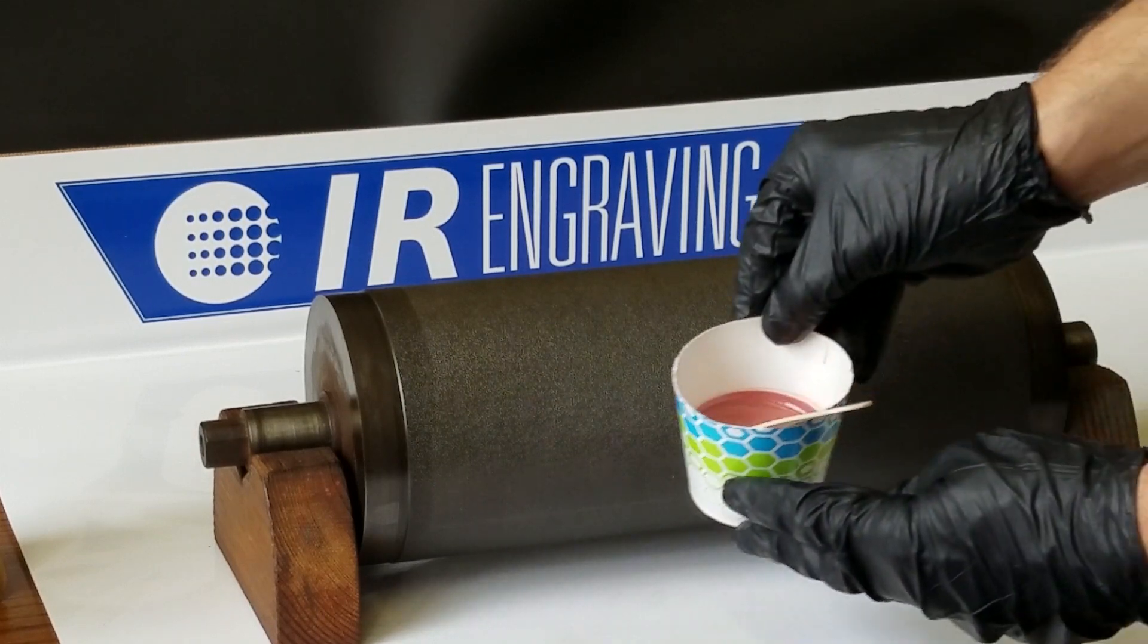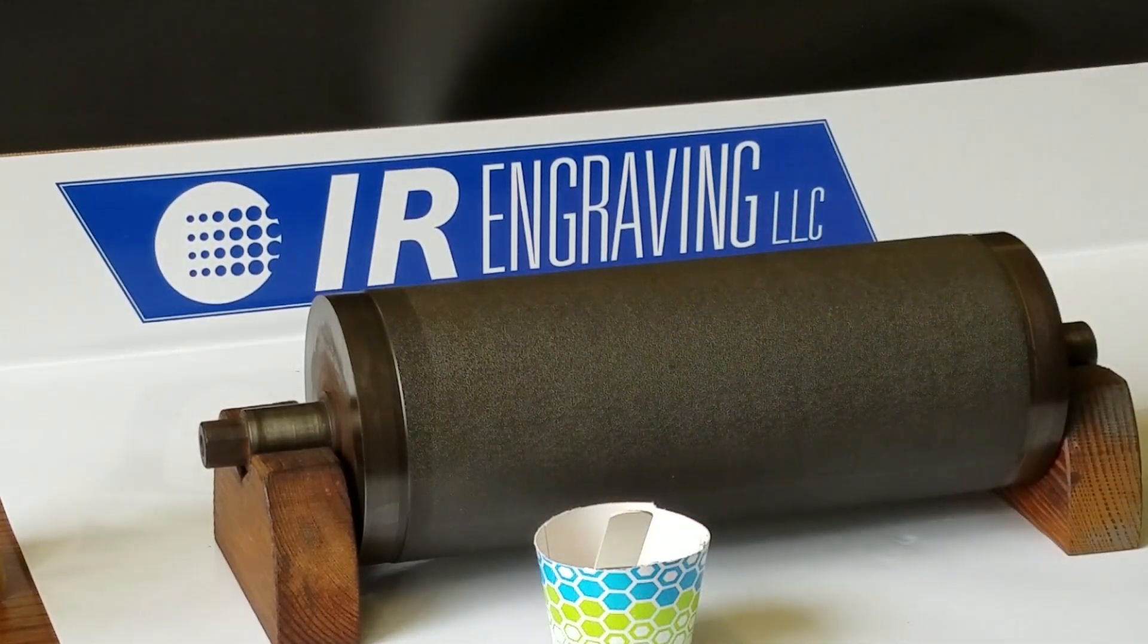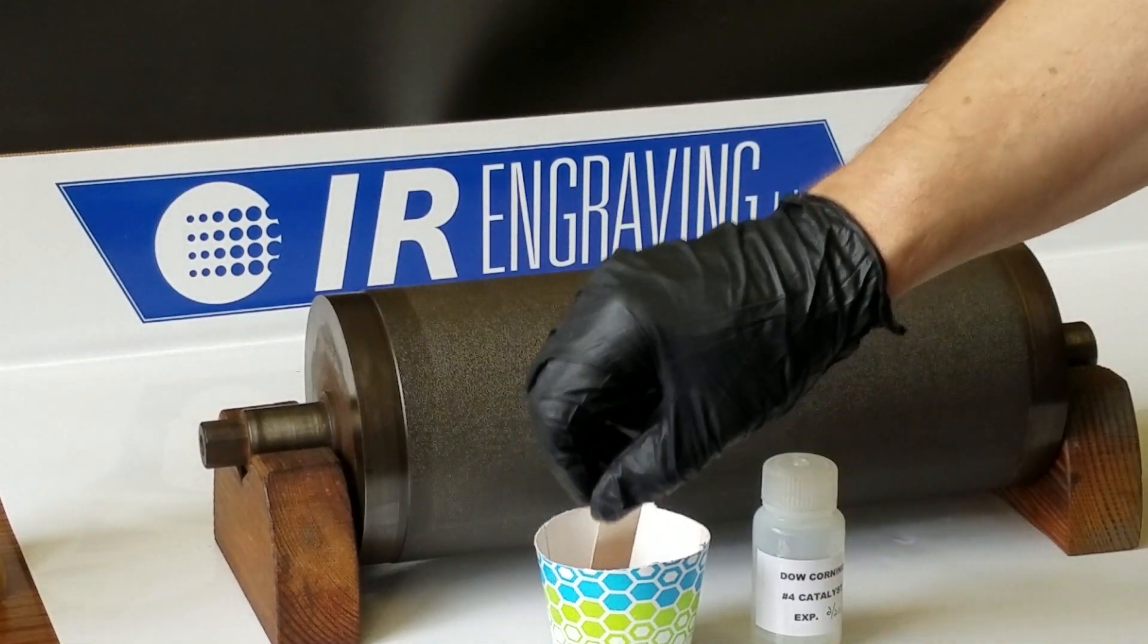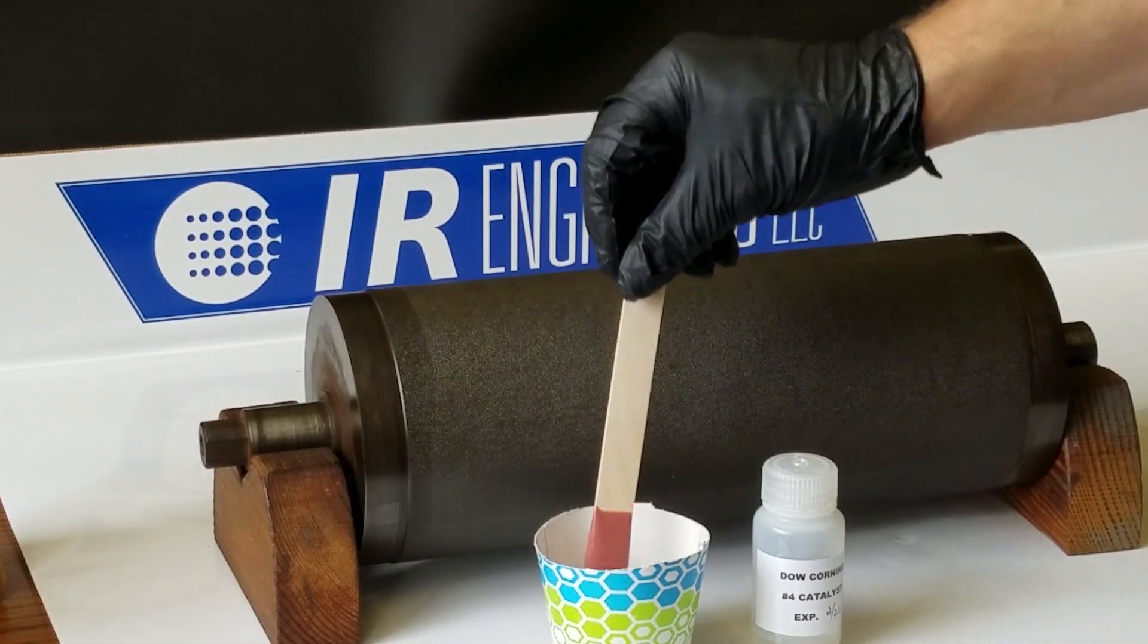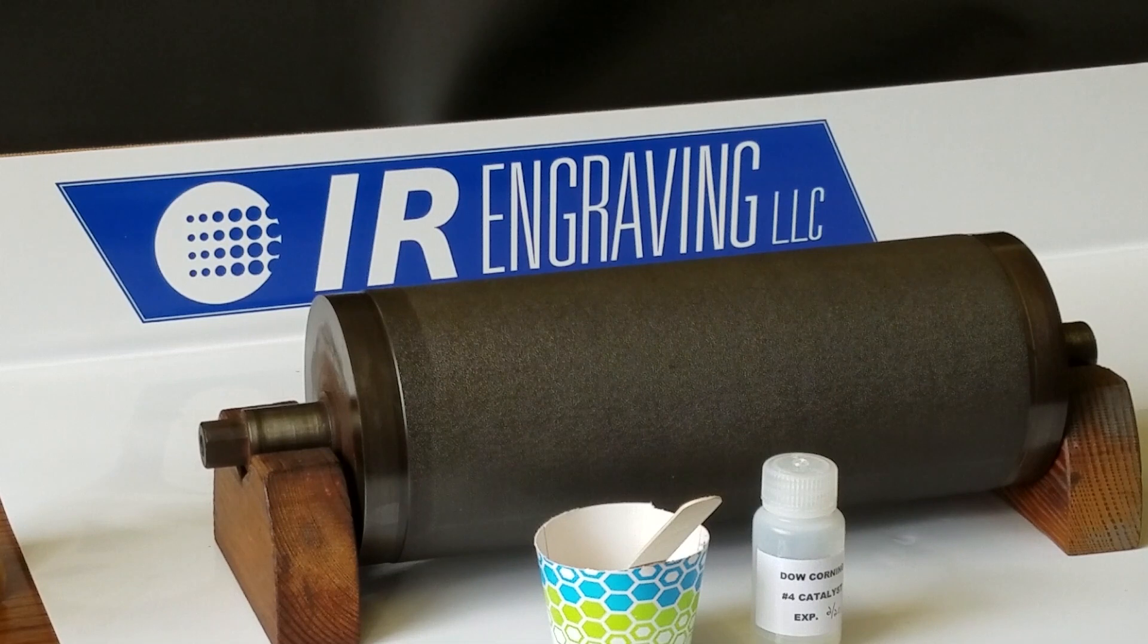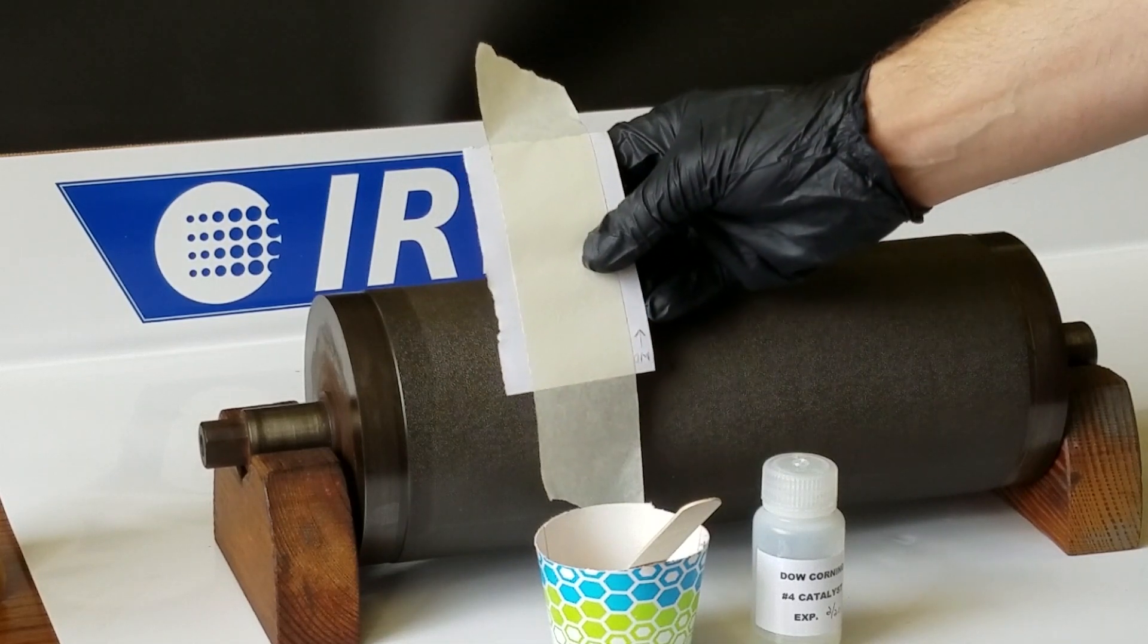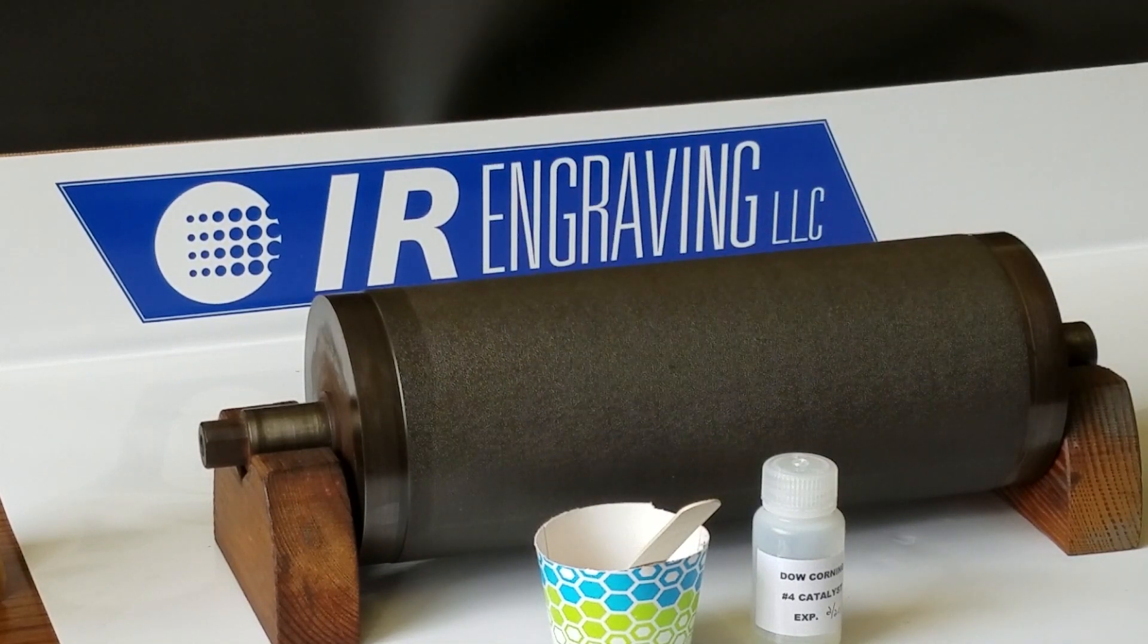Two to three ounces of silicone, the hardener also known as catalyst, a mixing stick, a tongue depressor works well, a piece of paper to back the silicone upon which the identifying information can be written.